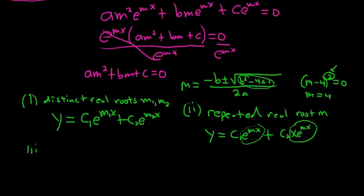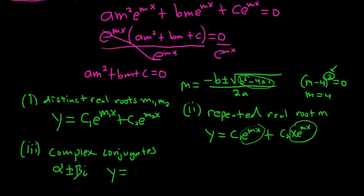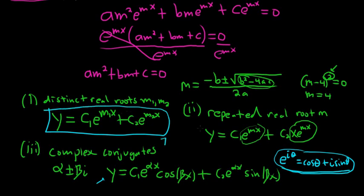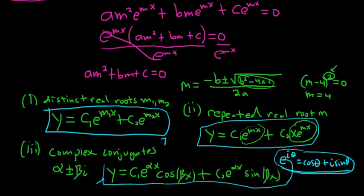The last case you could get is if you had complex conjugate roots. So if you had complex conjugates, say alpha plus or minus beta i, the general solution in this case would actually be c1 e to the alpha x cosine beta x plus c2 e to the alpha x sine beta x. You might say, how do you get cosines and sines from this? Euler's formula. There's a formula that connects e and sine and cosine: e to the i theta equals cosine theta plus i sine theta. You would use this formula to get rid of the e's and come up with this. So these are the three different cases that you could get.